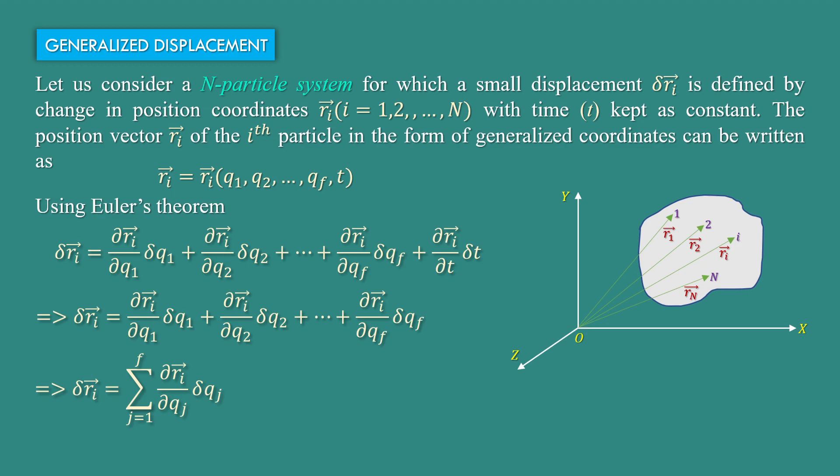The right-hand side in terms of summation sign can be written as the sum from j equals 1 to f of del ri by del qj into delta qj, where delta qj represents generalized displacement.